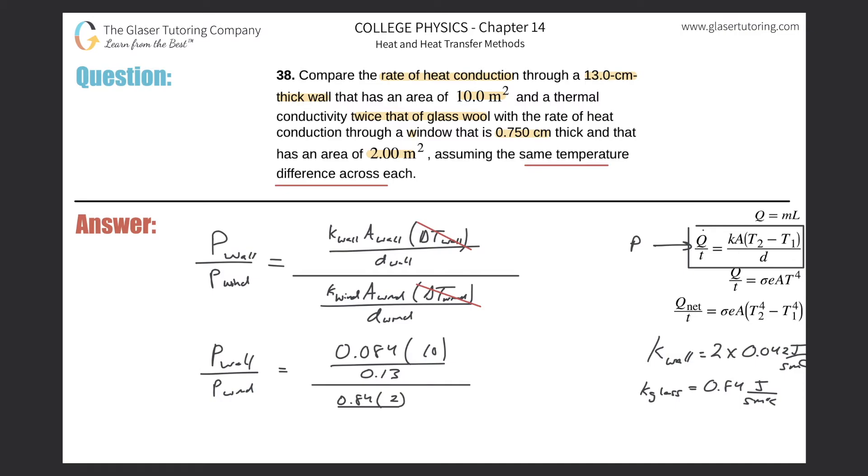Again, that's in centimeters, but we need it in meters, so divide that by 100, so it's going to be 0.00750. And lo and behold, we're going to calculate our ratio.